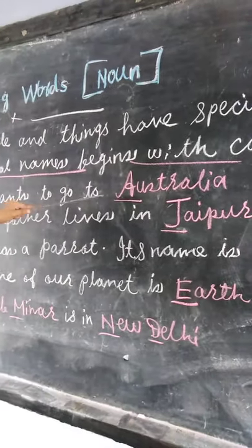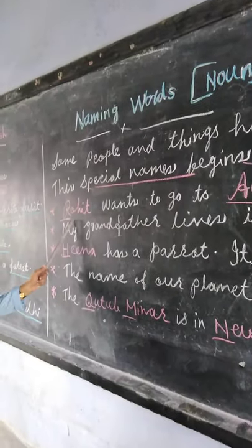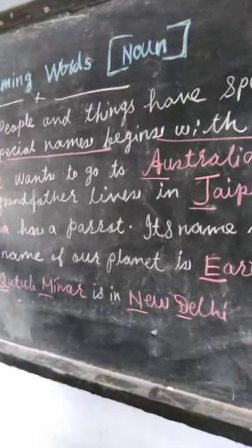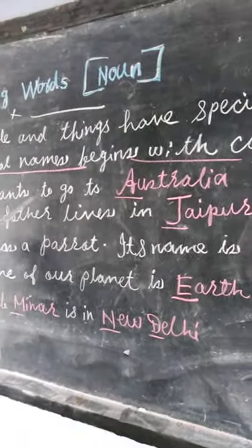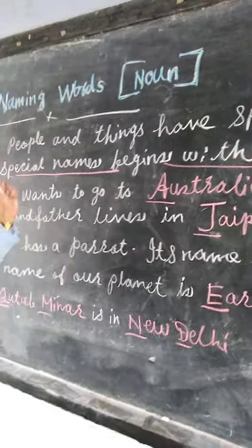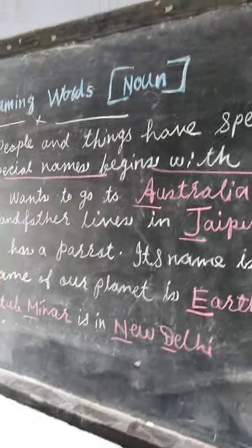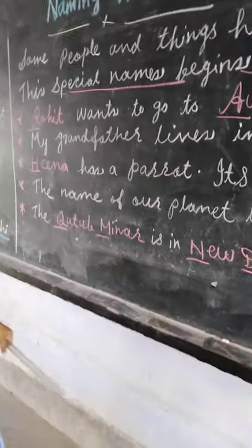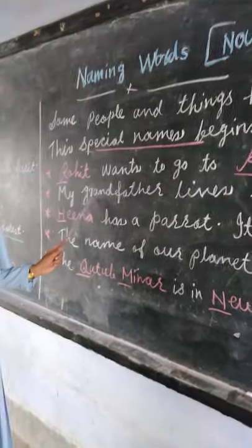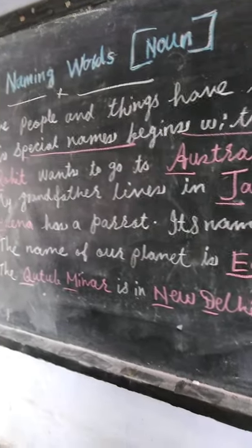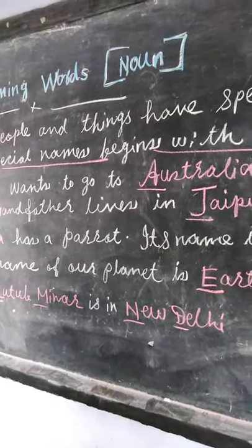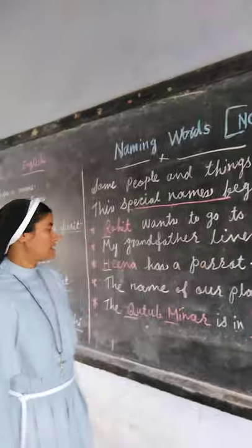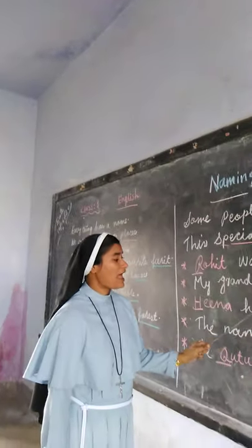For example: Rohit wants to go to Australia. Rohit and Australia are special names that begin with capital letters. My grandfather lives in Jaipur. There are many grandparents, so grandfather does not start with a capital letter. But Jaipur is a special place name, so it starts with a capital letter.